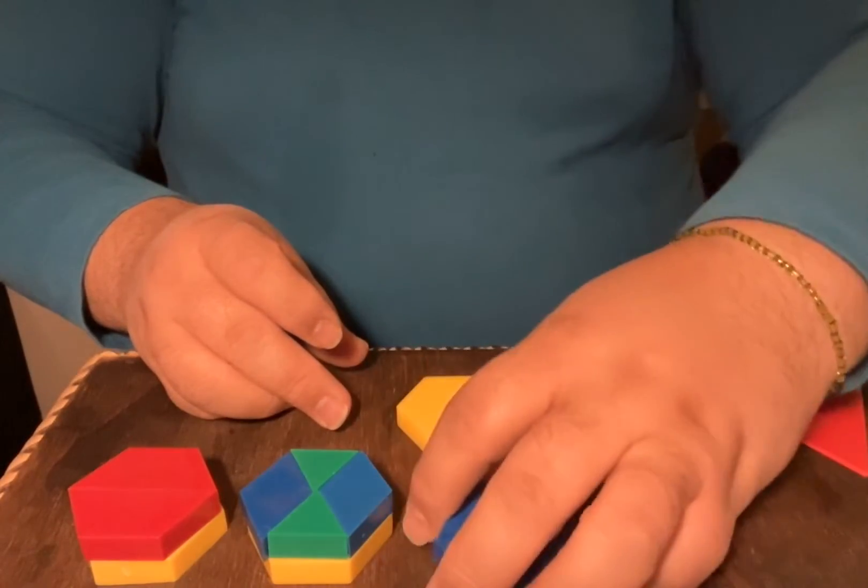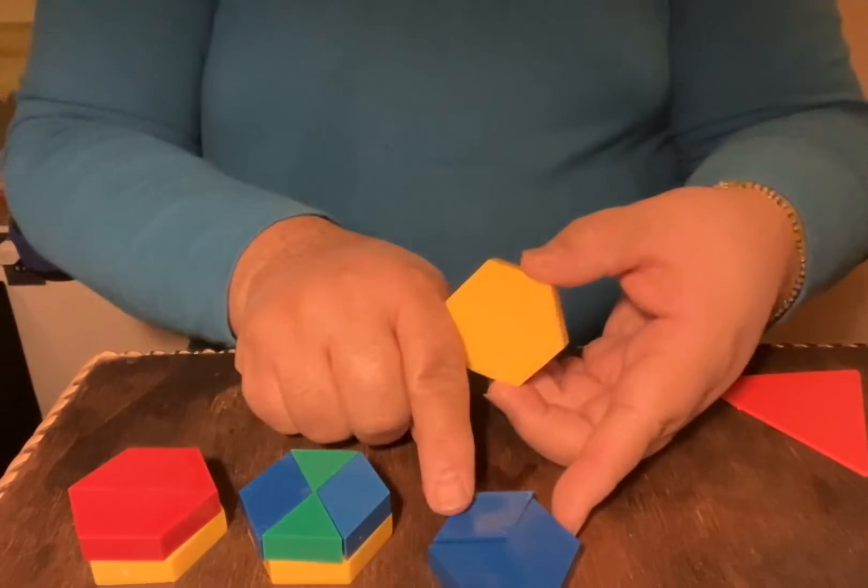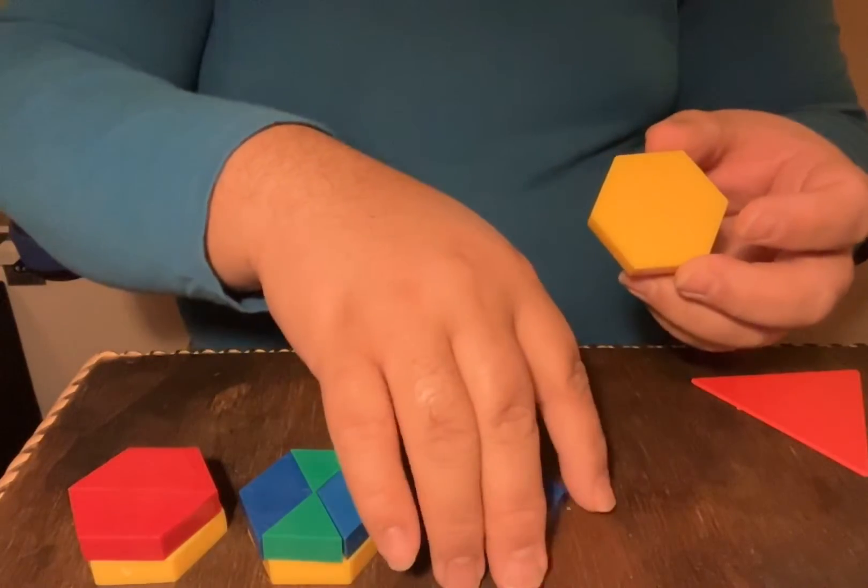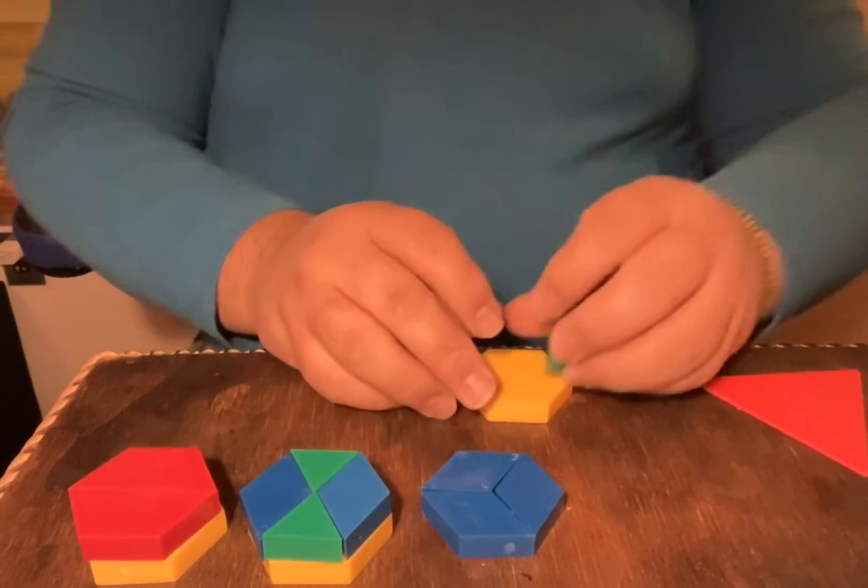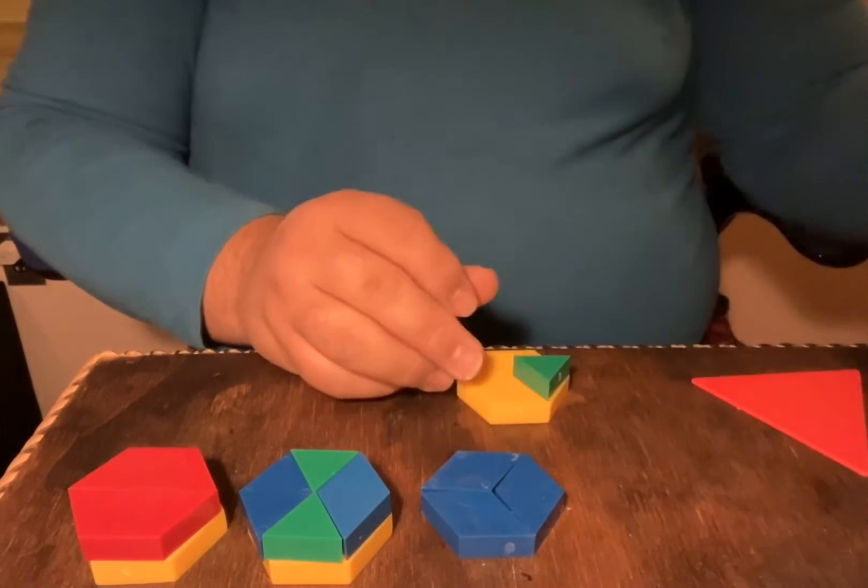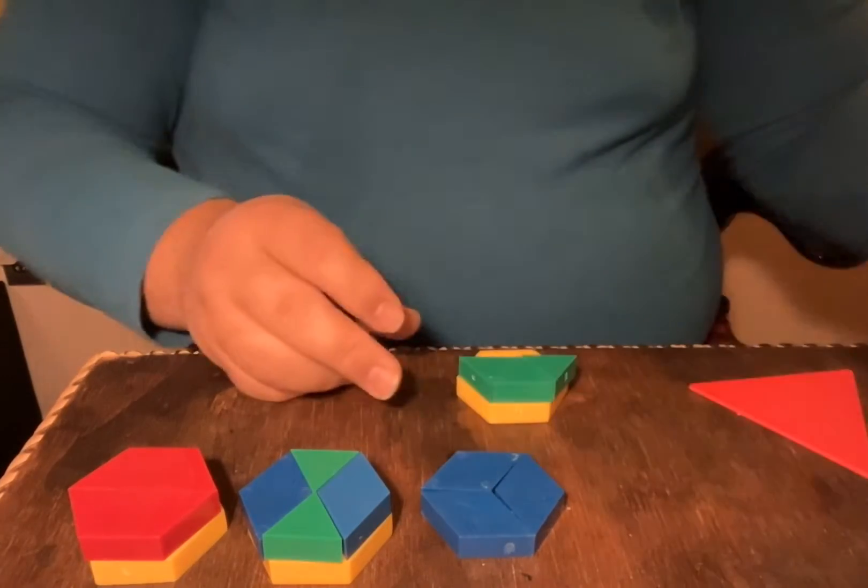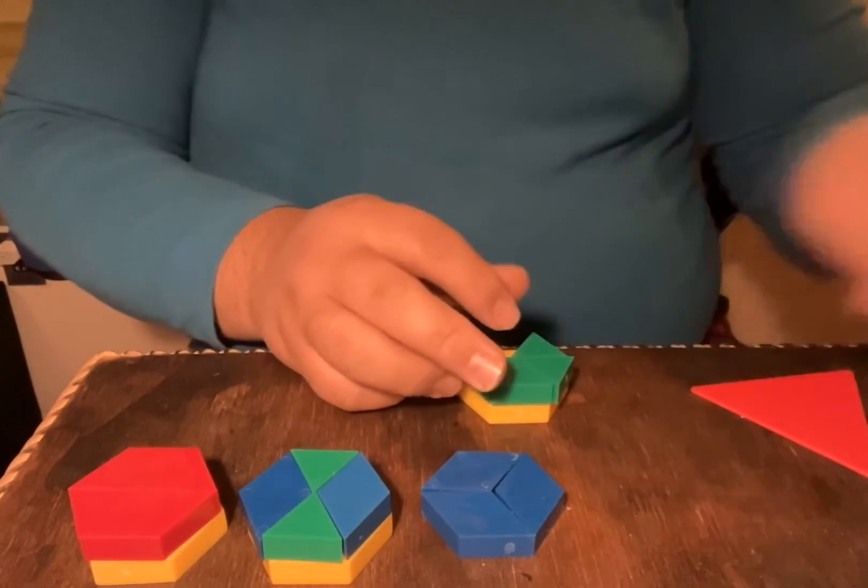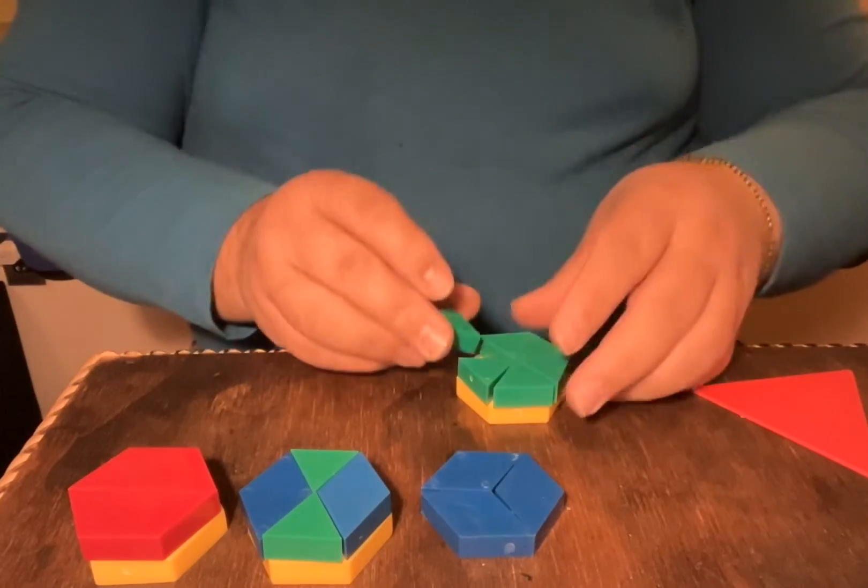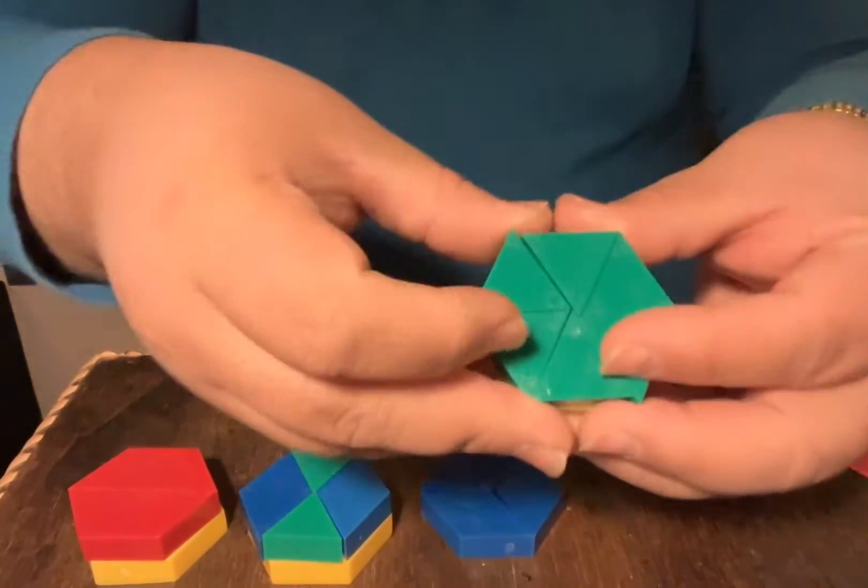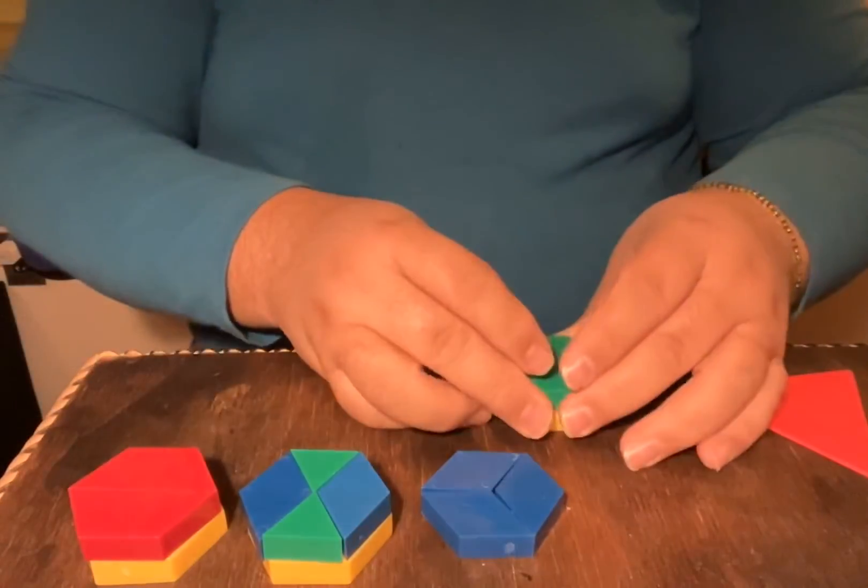And now I'm going to make another hexagon with just all the triangles that I can fit in here. So let's start with one, and two, and three, four, five, and six. And now I have six triangles forming a hexagon.